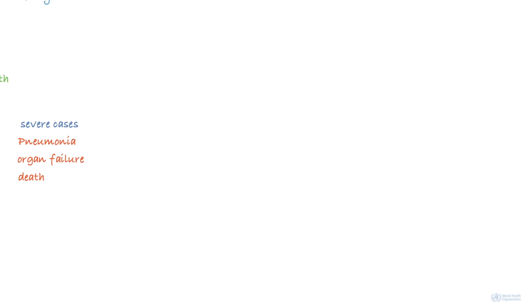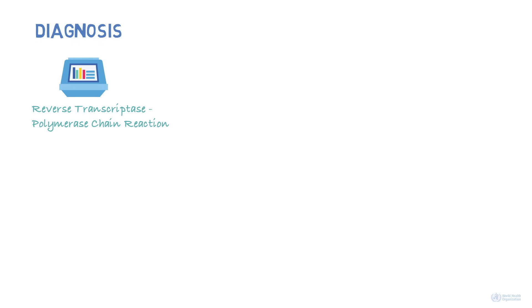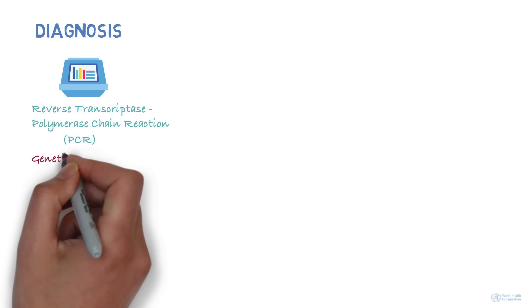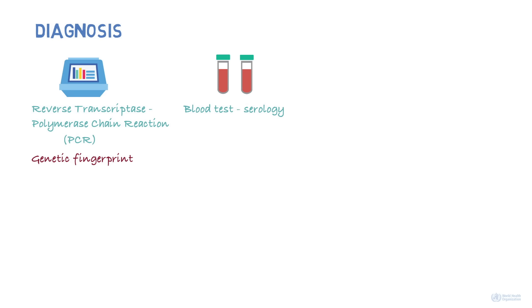How can we tell whether someone is infected? The infection is commonly diagnosed by a test called reverse transcriptase polymerase chain reaction, generally known as PCR. This test identifies the virus based on its genetic fingerprint. There is also a blood test that can check for antibodies against the virus, which may show that someone was infected in the past.